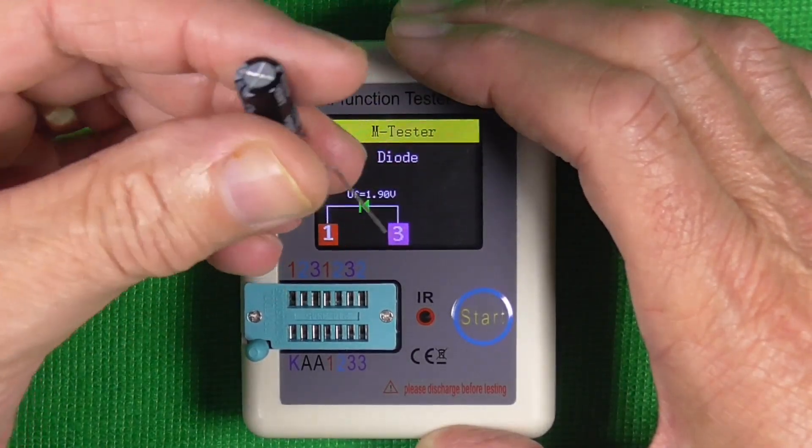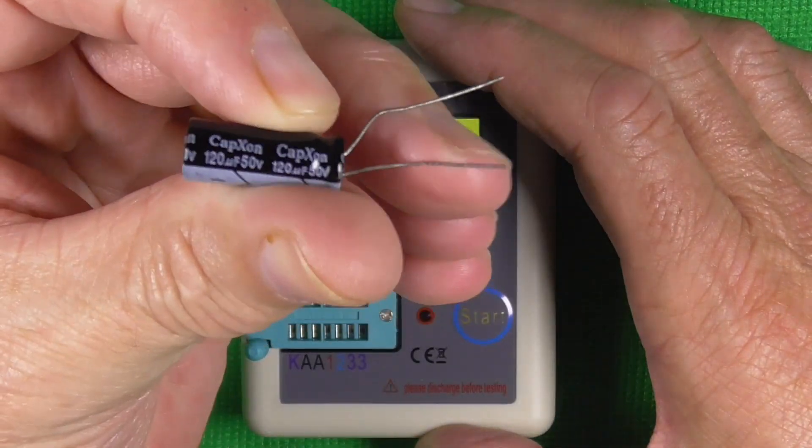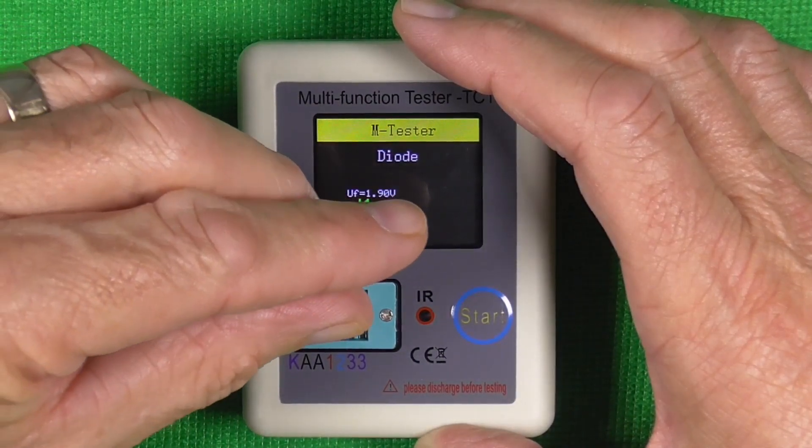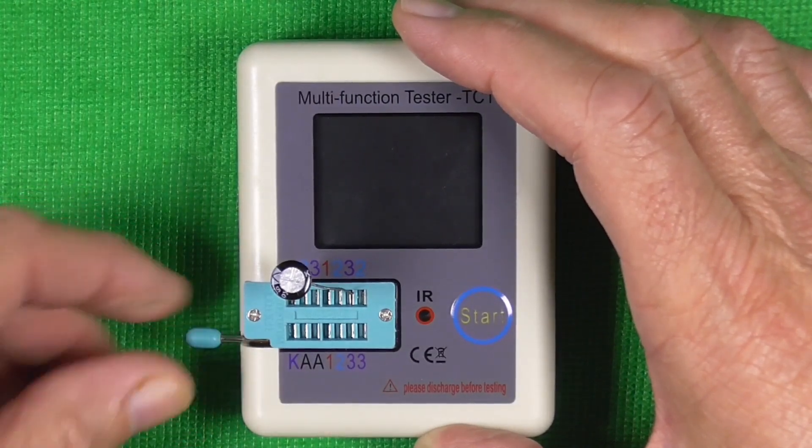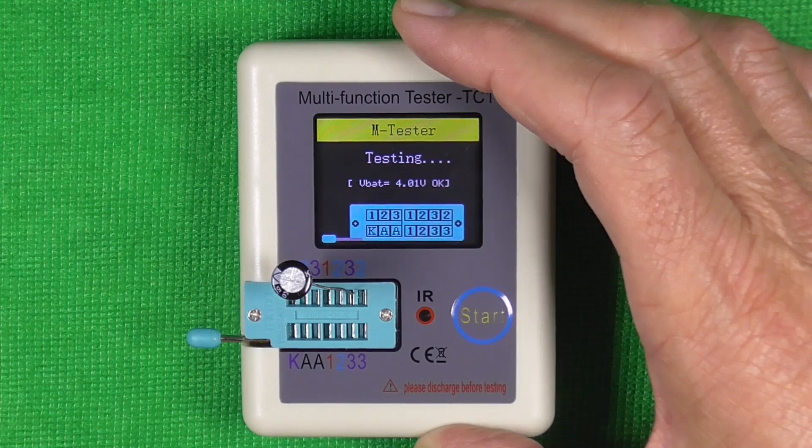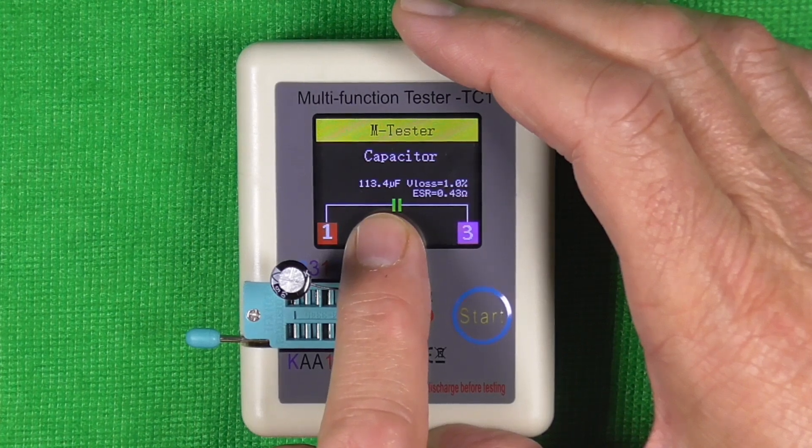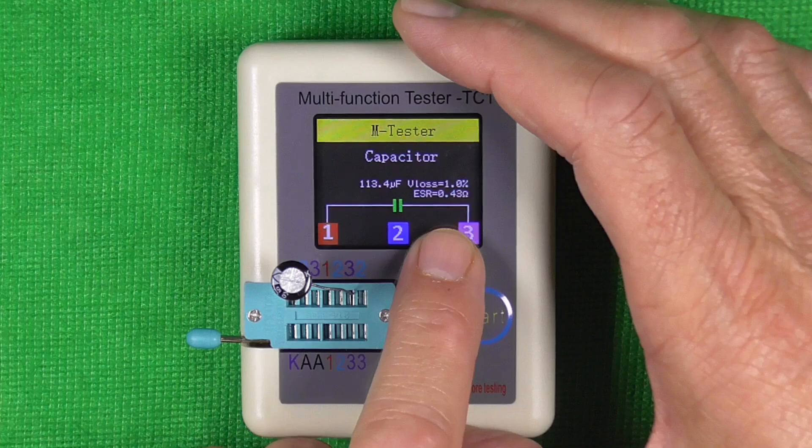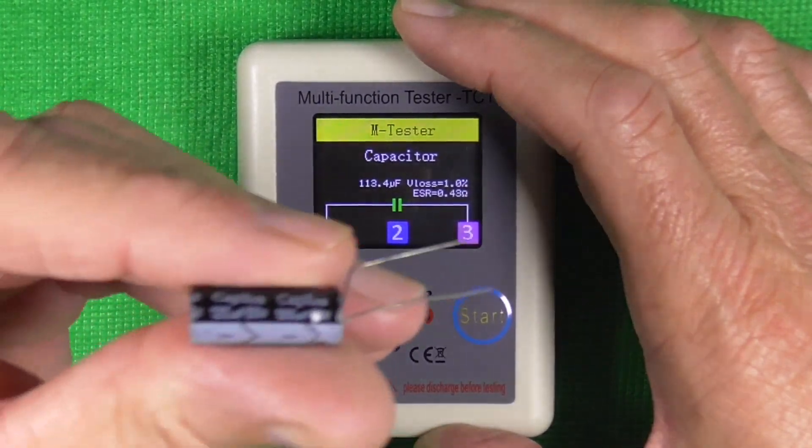Got another capacitor here that I've had lying around. This is a 120, 50 volts. Let's test that. Let's put it in, clamp that, press start. It's a capacitor, 113.4 microfarad with an ESR of 0.43 ohms. And it was in fact a 120.